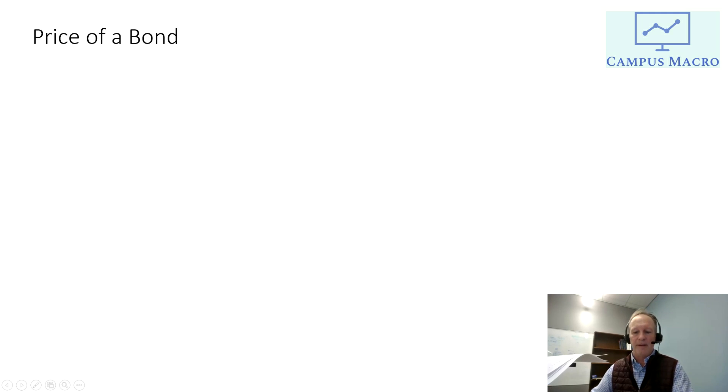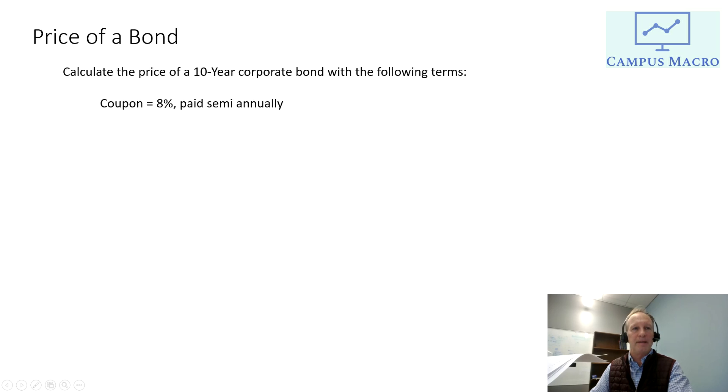So let's take a look at this and we're going to do a hypothetical. Let's say we want to calculate the price of a 10-year corporate bond with the following terms. Let's say it pays a coupon 8% paid semi-annually, which is normal. That means every six months. Okay, par is $1,000.